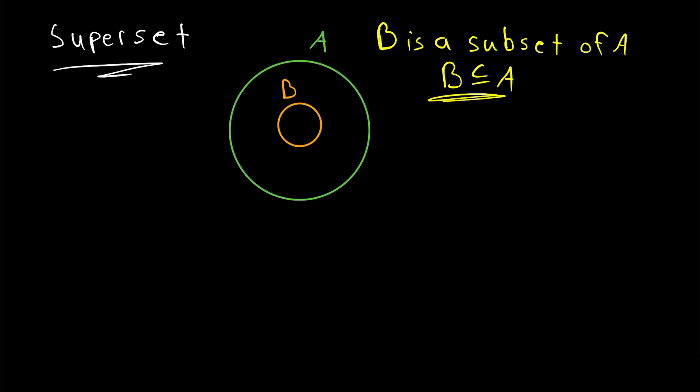B is a subset of A, meaning every element in B is also an element of A. In this same situation, we can say that A is a superset of B, written the same way as the subset relation, but in the opposite direction.